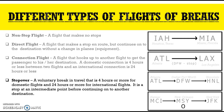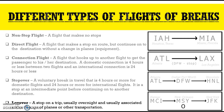A stopover is a stop at an intermediate point before continuing to another destination. For example, Kansas going to New Orleans with a stopover of four to six hours, then continuing to New York's JFK International Airport. If the stopover lasts overnight, it is called a layover.